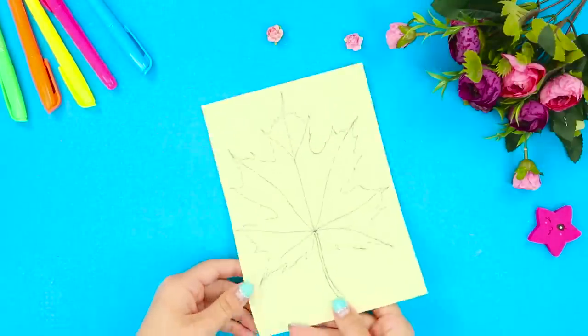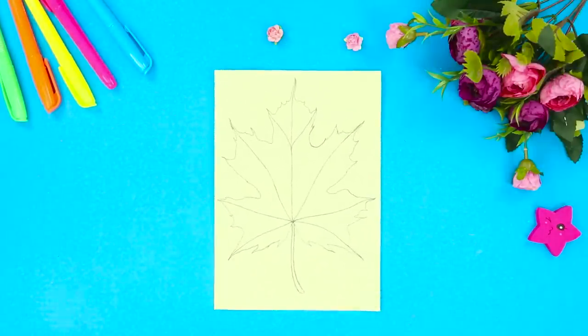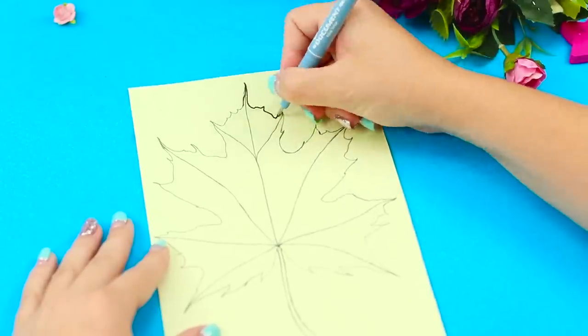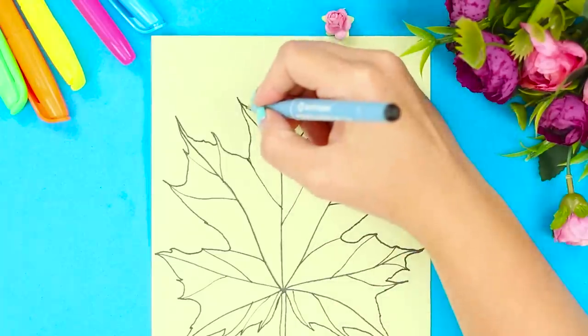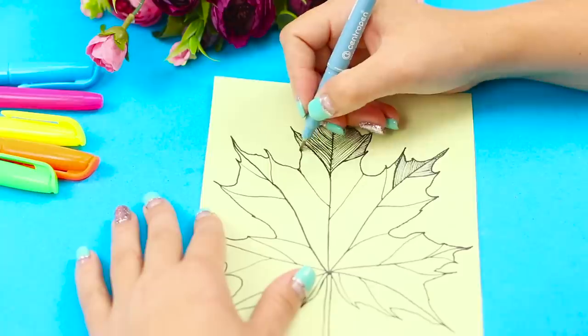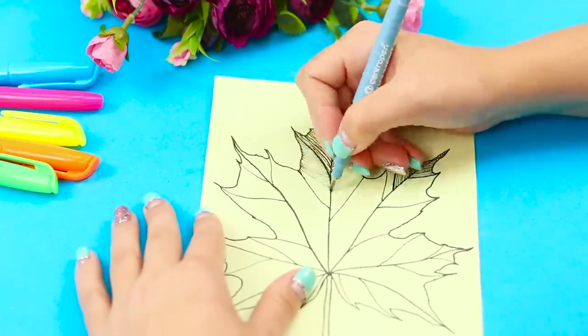And now take a sheet of paper with a sketch of a maple leaf. Go over the outline of the drawing with a capillary pen. Draw the streaks and start to fill in the drawing. Draw the lines neatly and not too thick.